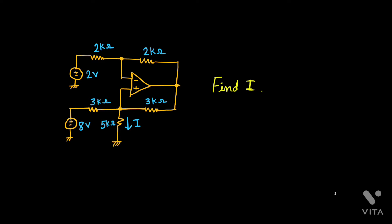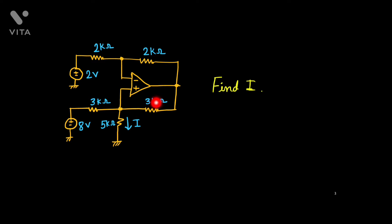Here you see there are two sources connected. One is 2 volt, another one is 8 volt, and with this op-amp circuit, this 2 kilo ohm, 2 kilo ohm resistance and here this 3 kilo ohm, 3 kilo ohm resistance are connected, and with this 5 kilo ohm connected to ground. We need to find out the current flowing through this 5 kilo ohm resistance, and we'll assume that the op-amp is an ideal one.